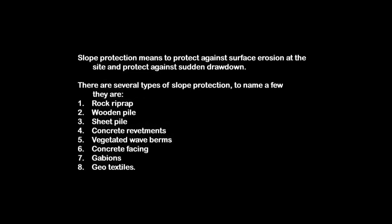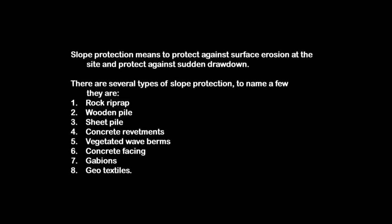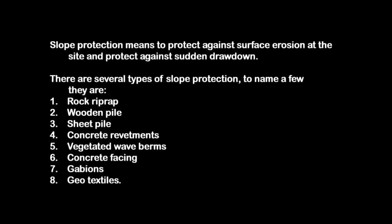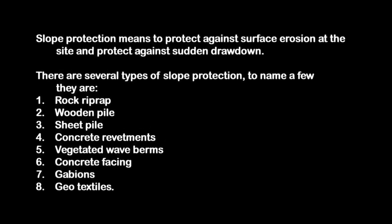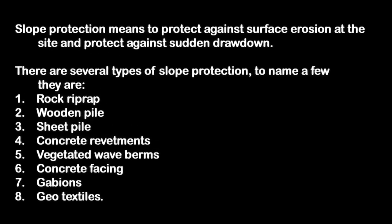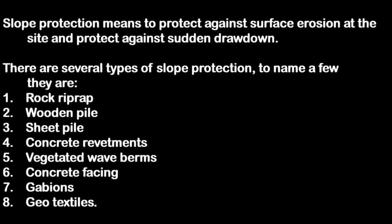The types of slope protection include: 1. Rock riprap, 2. Wooden pile, 3. Sheet pile, 4. Concrete revetments, 5. Vegetated wave berms, 6. Concrete facing, 7. Gabions, and 8. Geotextiles.